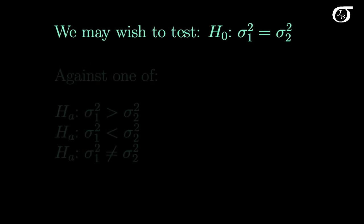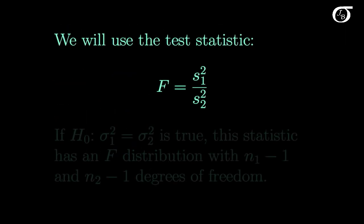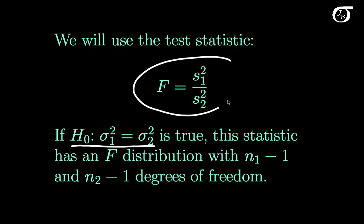Suppose we wish to test the null hypothesis that the population variances are equal. We're going to choose the appropriate alternative hypothesis as one of three possibilities. The correct one to choose depends on the nature of the problem at hand, as per usual in hypothesis testing. We are going to use the test statistic F equals S1 squared over S2 squared, the ratio of the sample variances. If the null hypothesis that the population variances are equal is true, then this statistic is going to have an F distribution.